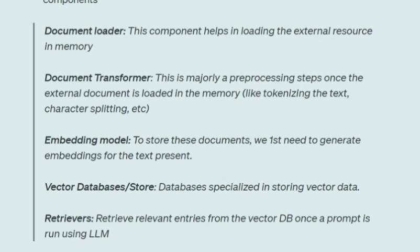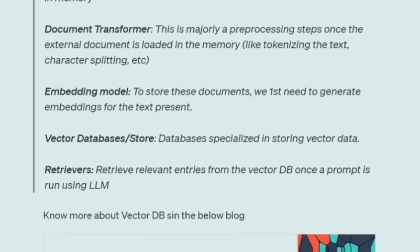The fifth component is retrievers, which retrieve meaningful entries given a prompt. For example, if you uploaded a CSV and asked which row represents Rahul, the retriever queries the vector database and fetches the relevant rows for Rahul. The LLM then structures the final output. So the retriever provides the query to the vector database to fetch meaningful embeddings.